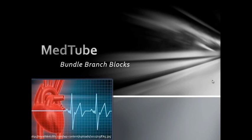Hello everyone and greetings again from MedTube for another video on ECGs about Bundle Branch Blocks. In Bundle Branch Blocks, the rhythm of the heart actually remains a normal sinus regular rhythm. Unlike the previous heart blocks which were also sinus rhythms originating from the SA node, but were not normal as most had an irregular pattern — well except for first degree heart blocks, which were actually regular.